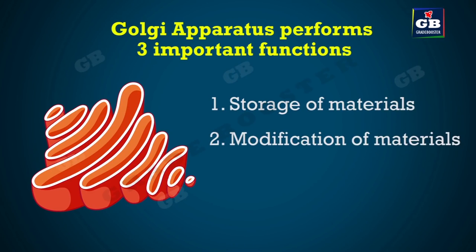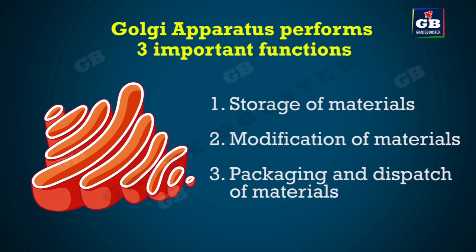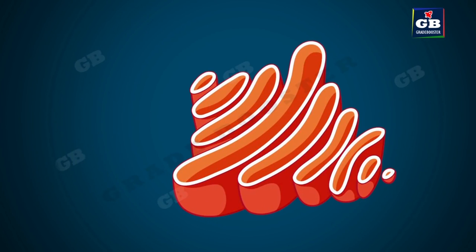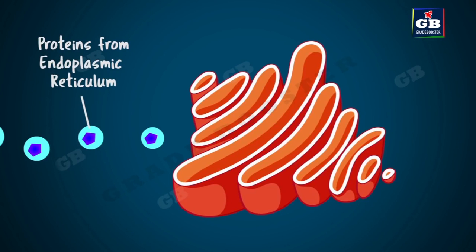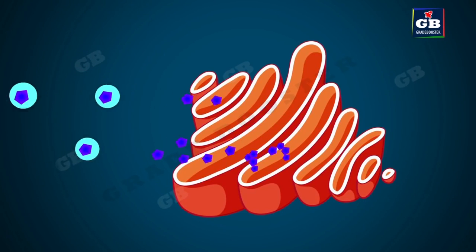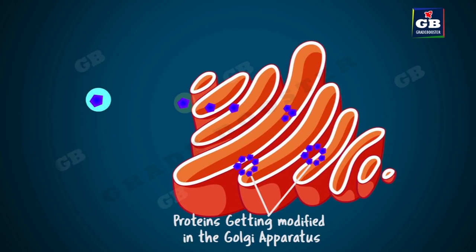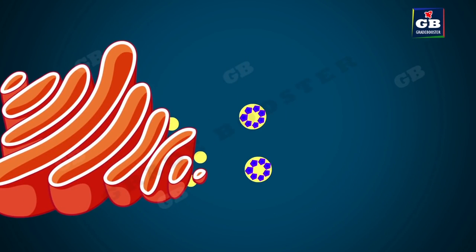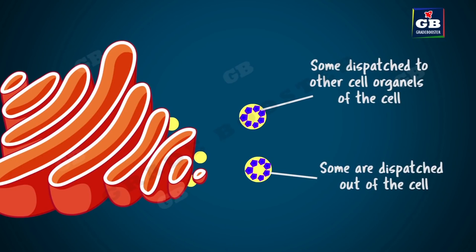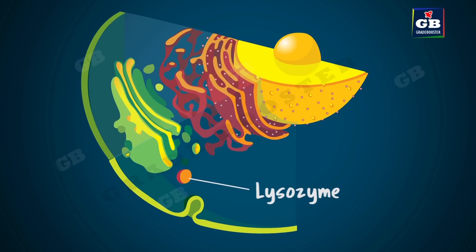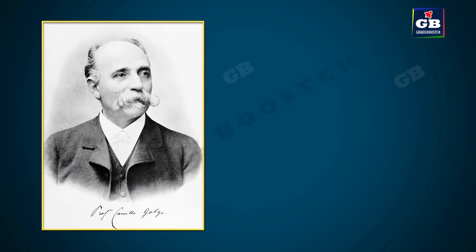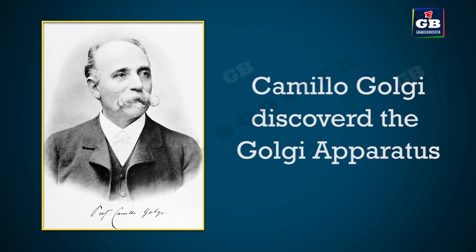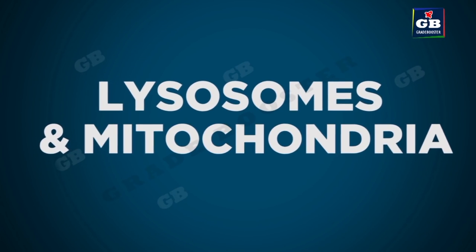The Golgi apparatus performs three important functions: storage of materials, modification of materials, and packaging and dispatch of materials. It gathers simple molecules, combines them into more complex molecules, packs them in vesicles, and either stores them for later use or dispatches them to different organelles inside the cell or to target locations outside the cell. Lysosomes are also prepared in the Golgi apparatus. These organelles are called Golgi apparatus after their discoverer, Camillo Golgi.